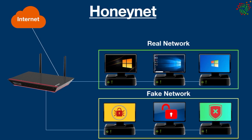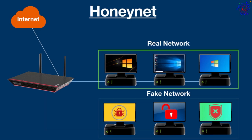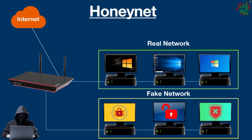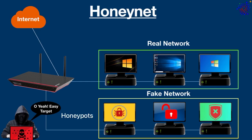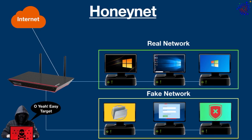By doing this, the honey net diverts cyber criminals away from sensitive data and systems, and they spend their time and resources attacking the fake network instead of the real one. These systems are intentionally left unguarded so that they look vulnerable and enticing to hackers. These systems are also known as honey pots, and they may include bait documents, fake login pages, or other enticing content likely to attract malicious actors.